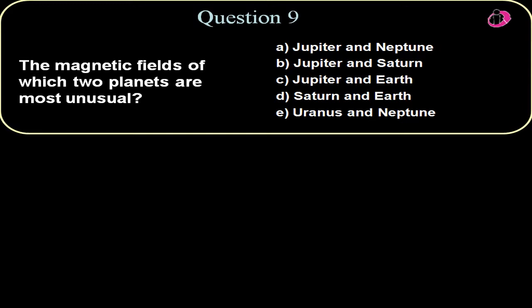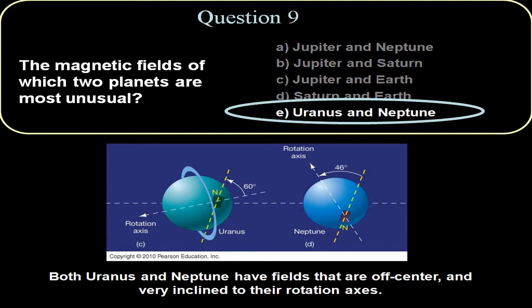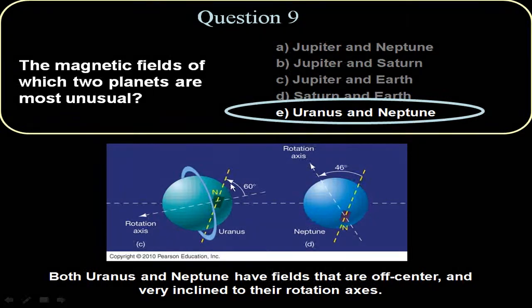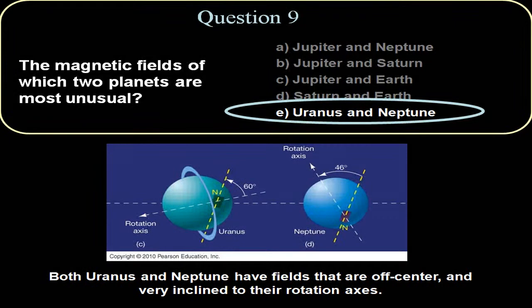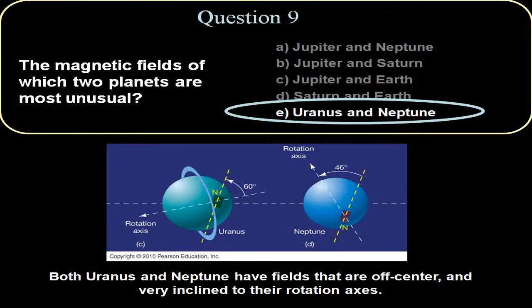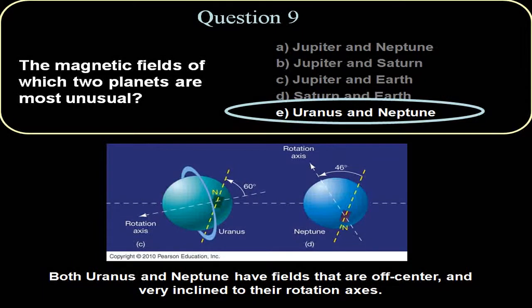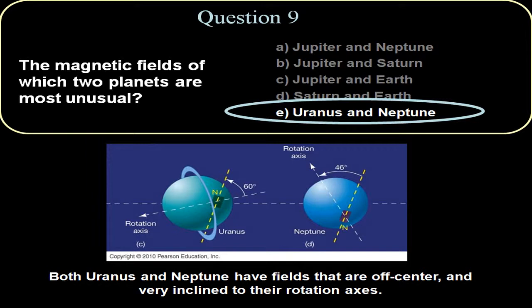However, this did not happen with Uranus and Neptune. The axis of rotations were in different directions and the magnetic fields were quite different from those axis of rotation. For Uranus, it was 60 degrees in the opposite direction from the rotation axis. For Neptune, it was 46 degrees from the rotation axis to the magnetic field axis. This is quite a mystery why these planets would not have the dynamo effect occurring. And that would be something for future investigations to discern.